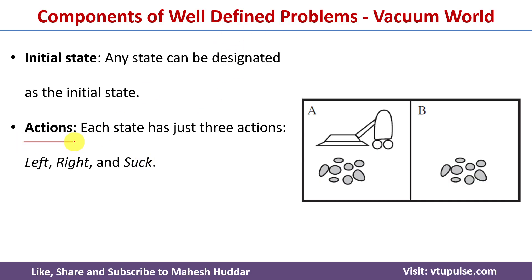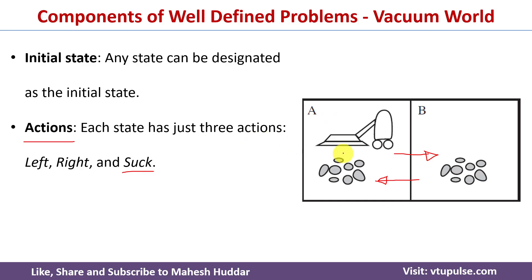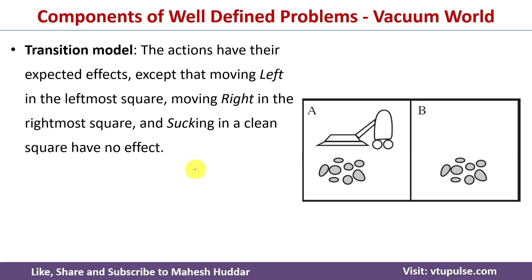The next component is the set of actions. Each state has three possible actions. Whenever the AI agent senses dirt in a particular room, it executes a suck action to clean it. The second action is the right action — moving from location A to location B. The third action is the left action — moving from location B back to location A. So there are three actions: left, right, and suck.